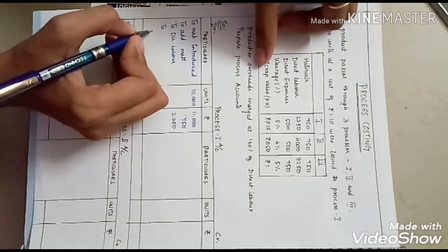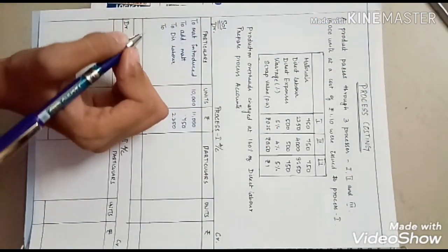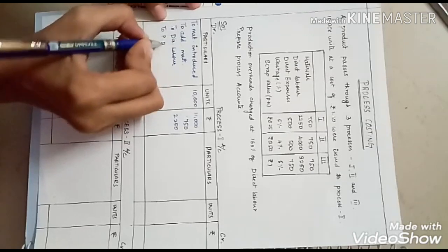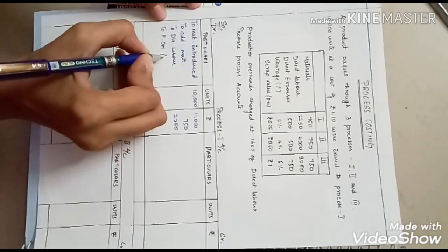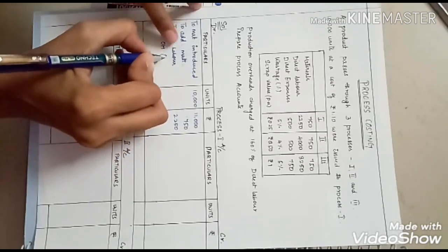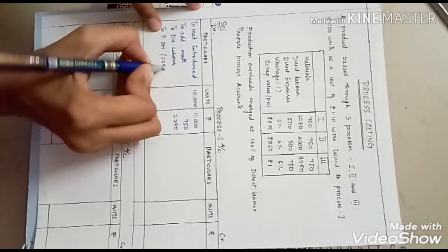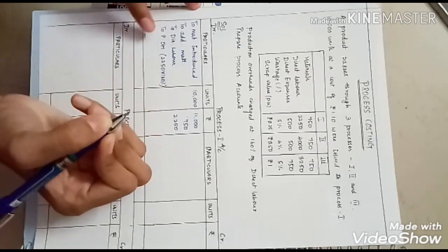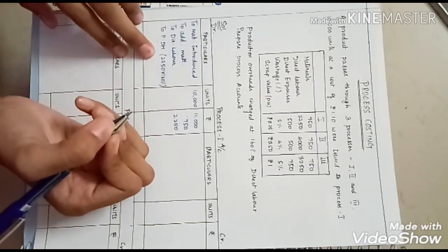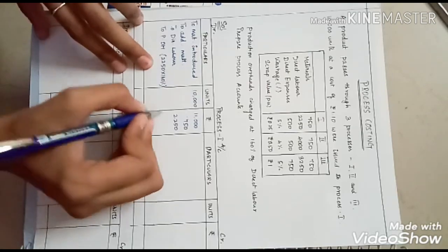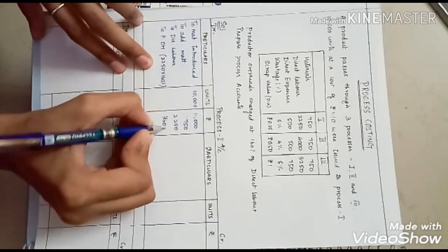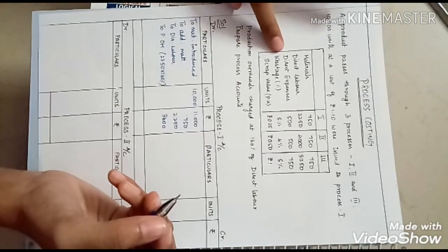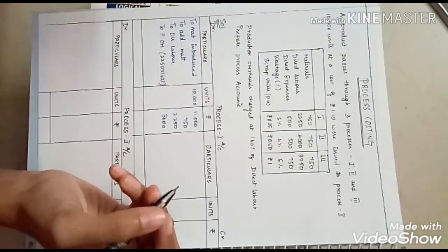Production overheads are charged at 160% of direct labor. So direct labor 2,250 into 160% — 160% of 2,250 is 3,600. Then we have wastage: 5% wastage for process one.